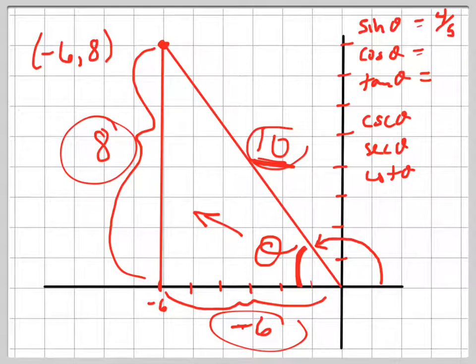The cosine is the adjacent to that angle, which is negative 6, over the hypotenuse, which is 10, which reduces to negative 3 fifths.